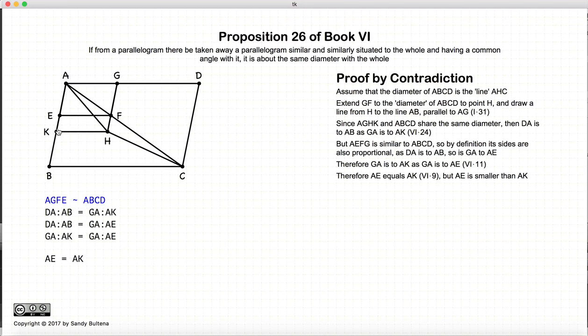So I have here that AE is equal to AK. But of course in the manner in which I drew it, it is obvious that AE is less than AK. And that is our contradiction.